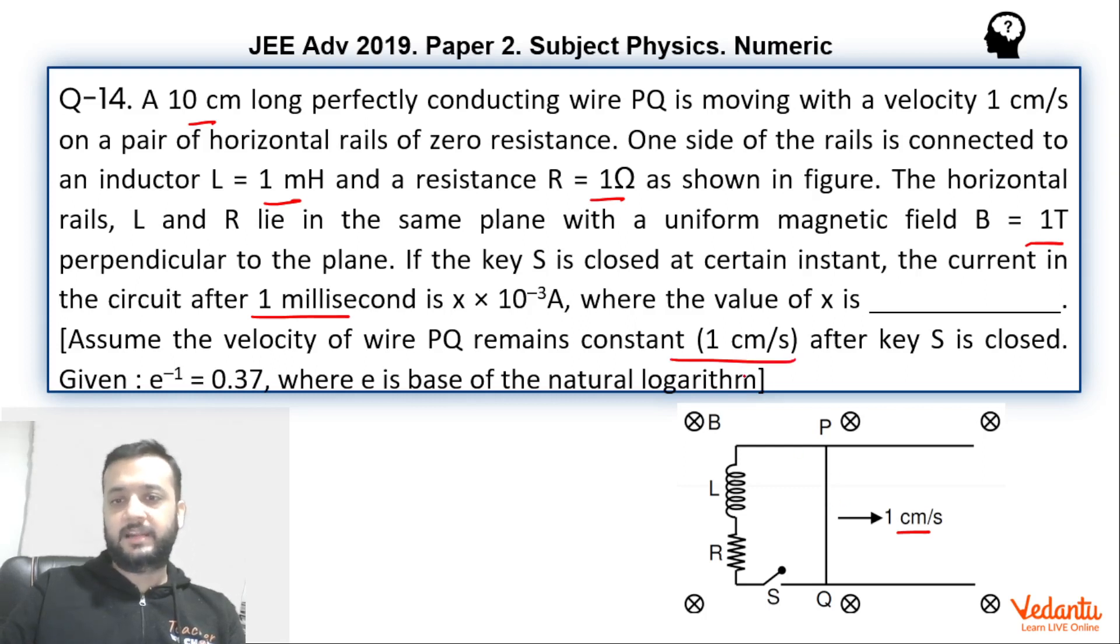But since in the question it is given that speed remains constant, therefore there must be some external agent. Although we don't have to be bothered about this because it's not going to harm us. We don't need to be concerned but it's just that for clarity sake I told you.